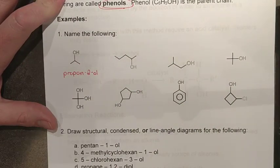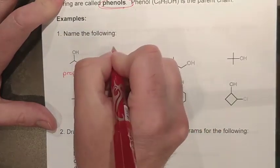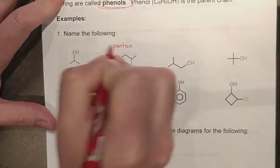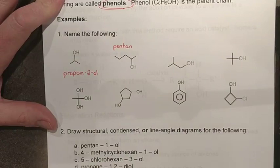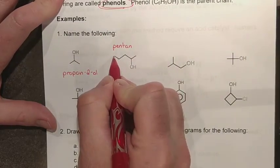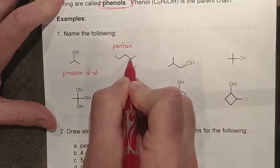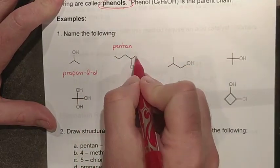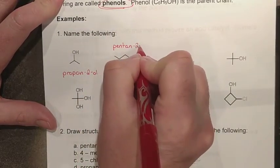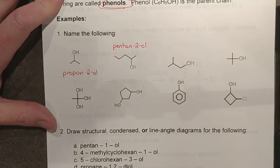Here's another one - five carbons, all single bonded, so this is pentane. Now we need a numbering strategy. From the left the hydroxyl group is on carbon 4; from the right it's on carbon 2. So we number from the right to keep the numbering lowest: this is pentan-2-ol.